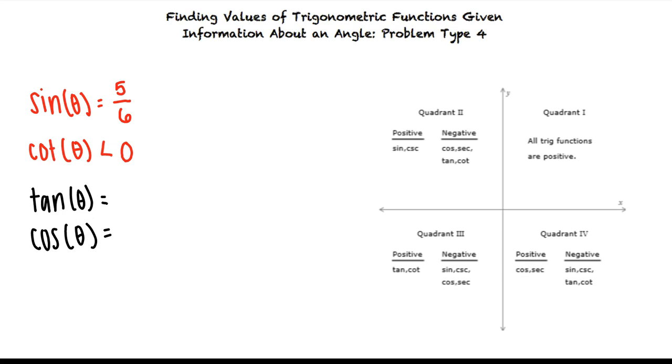In this problem we're given that at this angle the sine function is positive and the cotangent function is negative because cotangent theta is less than zero. Based on this information we know that theta must be in quadrant 2.